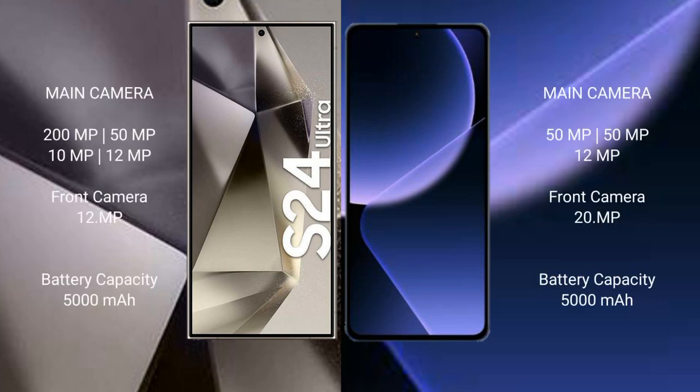Samsung Galaxy S24 Ultra features a rear quad-camera setup: 200MP main, 10MP, 10MP, and 12MP lenses, plus a 12MP front camera. Xiaomi 13T Pro features a rear triple-camera setup with 50MP, 50MP, and 12MP lenses, plus a 20MP front camera.